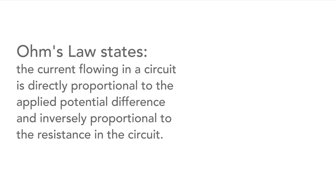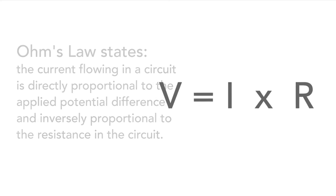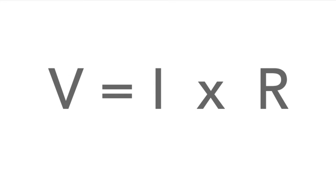But to summarise, Ohm's law states that the current flowing in a circuit is directly proportional to the applied potential difference, and inversely proportional to the resistance in the circuit. And the equation for relating voltage, current and resistance is V equals I times R.